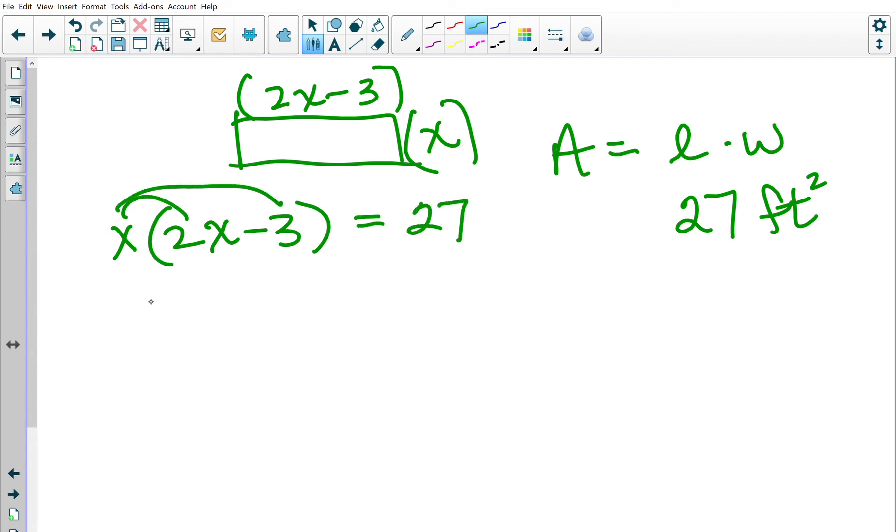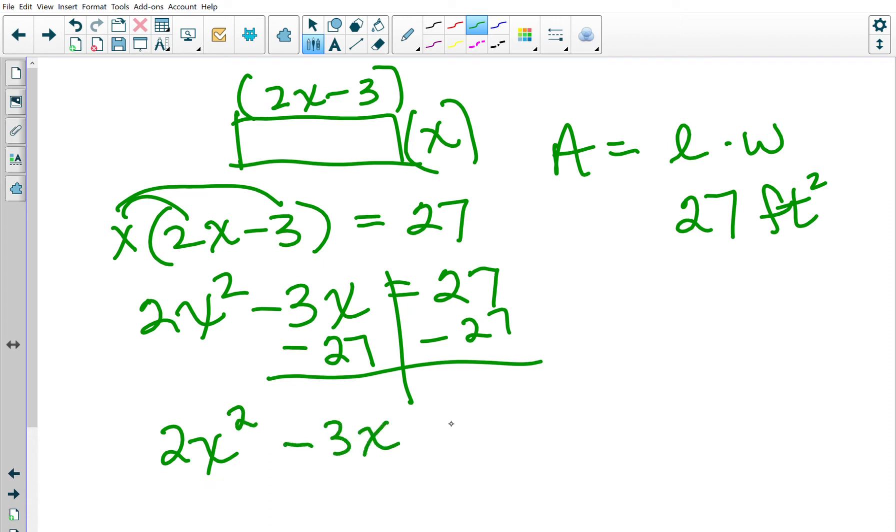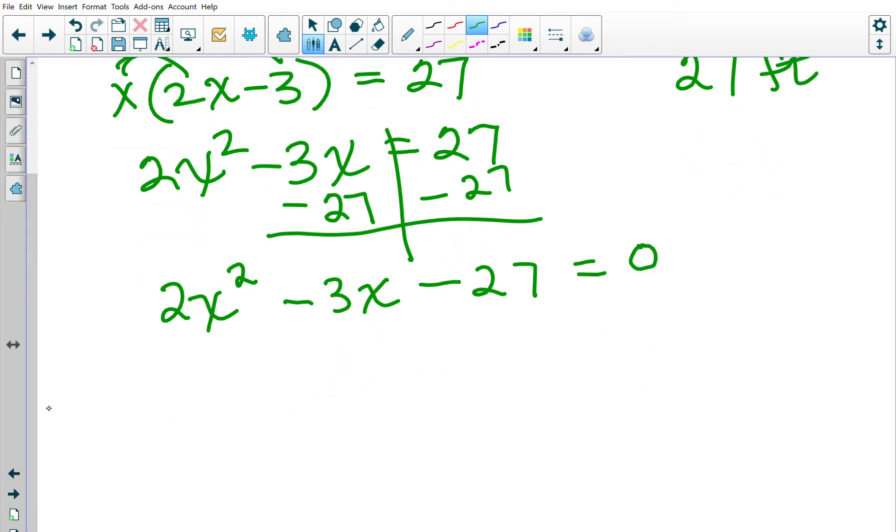I'm going to distribute and I have 2X squared minus 3X equals 27. I want to make this a quadratic equation, meaning I want the zero to the right, so I'm going to subtract 27 on both sides of this equation. I have 2X squared minus 3X minus 27 equals zero. Now I want to factor this trinomial.